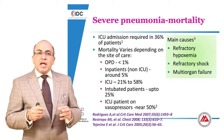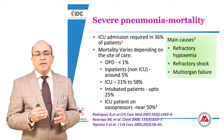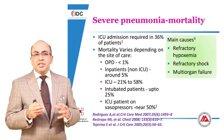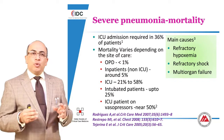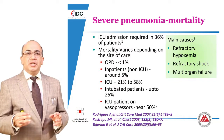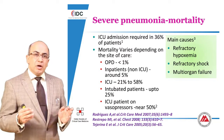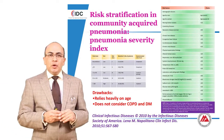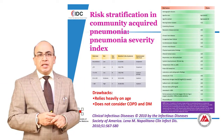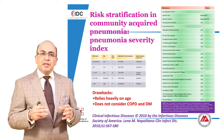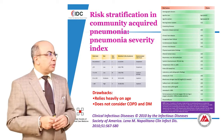Since the mortality is so high, it is very important to stratify the patient according to where they need to be managed — whether at home, in the hospital wards, or in the ICU. There are various risk stratification scores that need to be considered when deciding the site of management for the patient.